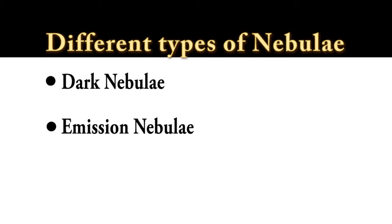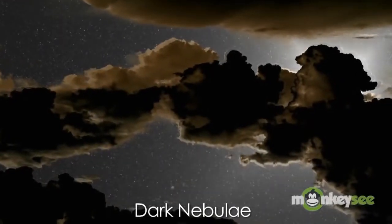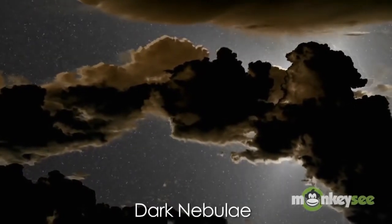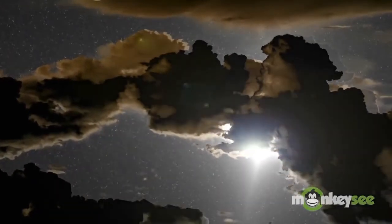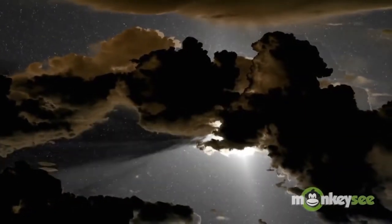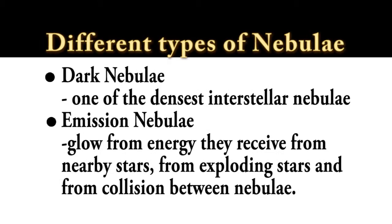Astronomers identify several other types of nebulae. Most important among these are dark and emission nebulae. Dark nebulae are regions of interstellar gas and dust dense enough to prevent most visible light from behind them from reaching us — they look like regions of empty space, yet are among the densest interstellar nebulae. Emission nebulae are regions that glow from energy received from nearby stars, from exploding stars, and from collisions between nebulae.